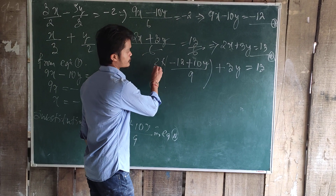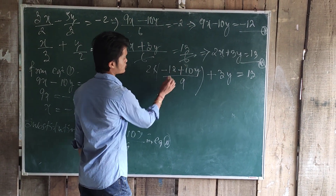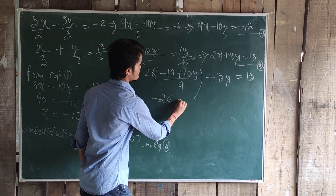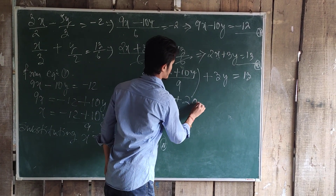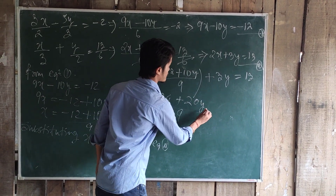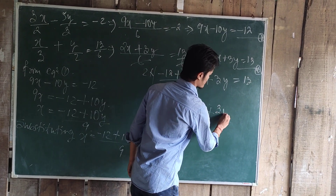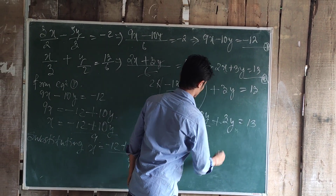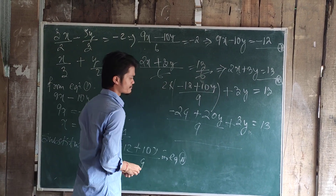Now we are going to expand this bracket: 2 times the quantity minus 12 plus 10y gives us minus 24 plus 20y, all over 9, plus 3y is equal to 13. Let's take the LCM here.